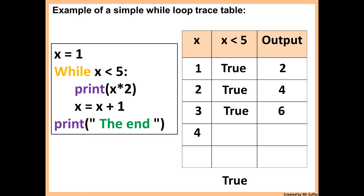Now 2 is less than 5 — that's true again. 2 times 2 is 4, x plus 1, that's 3 now. 3 is less than 5 — true. 3 times 2 is 6, and then we go back to x, increase it by 1. 4 is less than 5 — that's true. 4 times 2 is 8, then we increase x to 5.